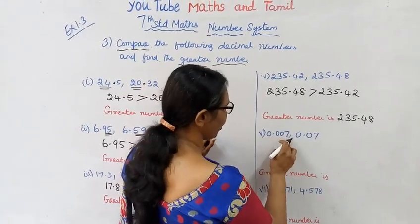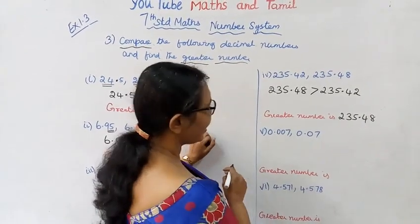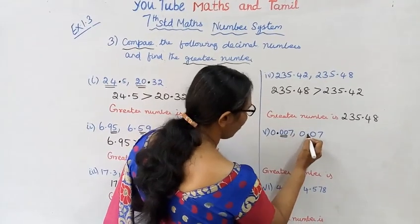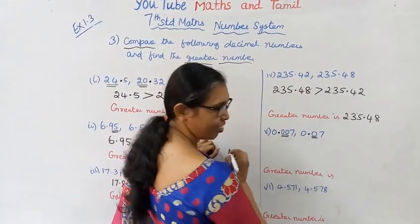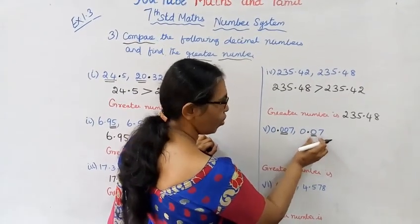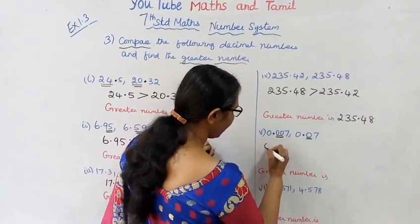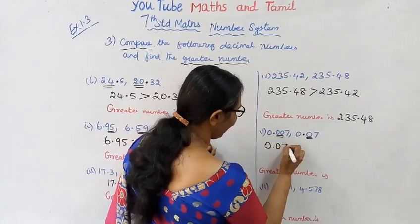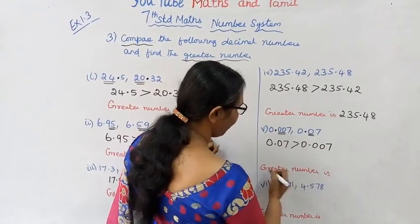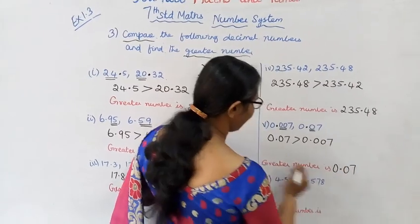Next: 0.007 and 0.07. Comparing after the decimal point: 0.07 is greater than 0.007. Greater number is 0.07.